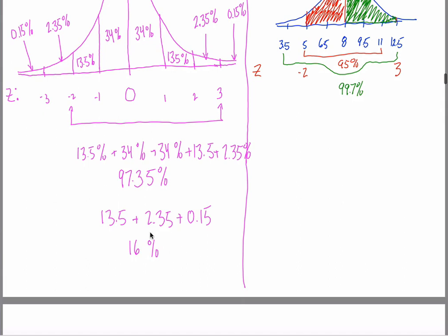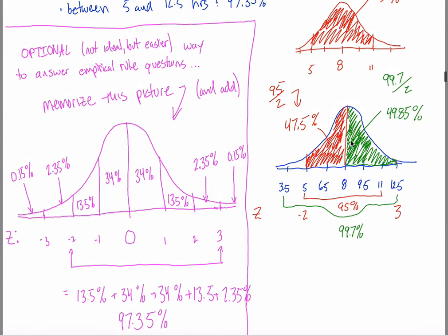You lose a little bit of the intuition and the reason why we're doing this in the first place, but you always get the right answer. Whether you do it this way or the more preferred method, if you get the right answer and you can draw the picture — whether the picture looks like this or like this — you're getting full credit. So there's an optional way that you can answer these empirical rule questions if you'd like.